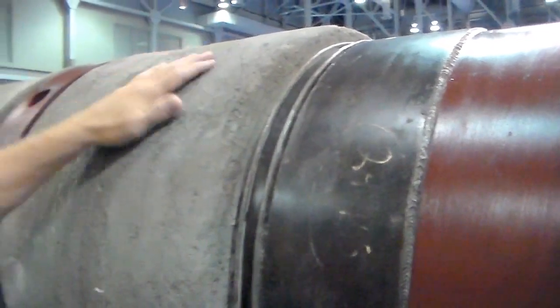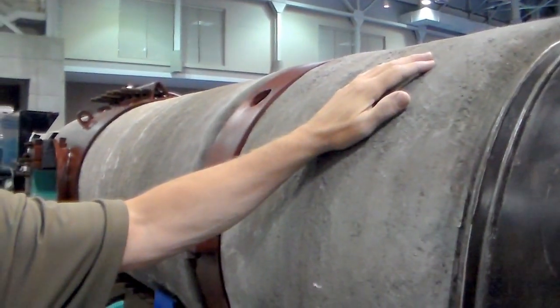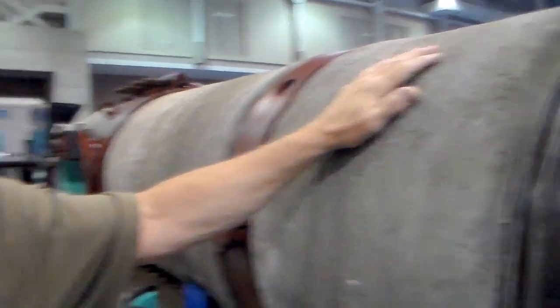That's something quite frankly that you could not do with a pre-stress concrete cylinder pipe. So when it comes to adaptability and repairability in the field, bar wrap has become a favorite choice here in the east.